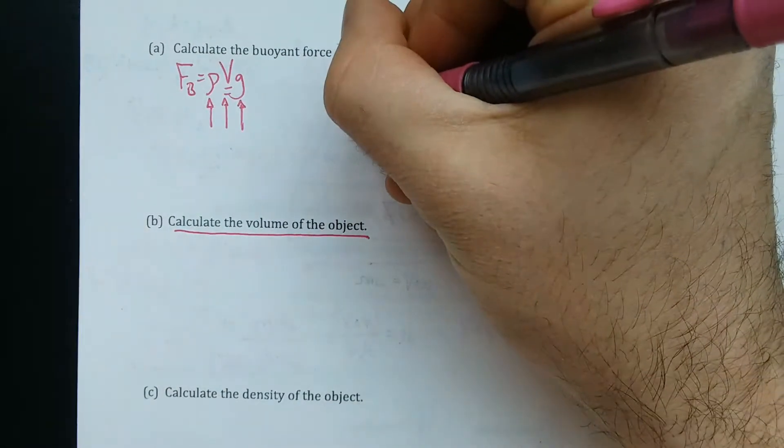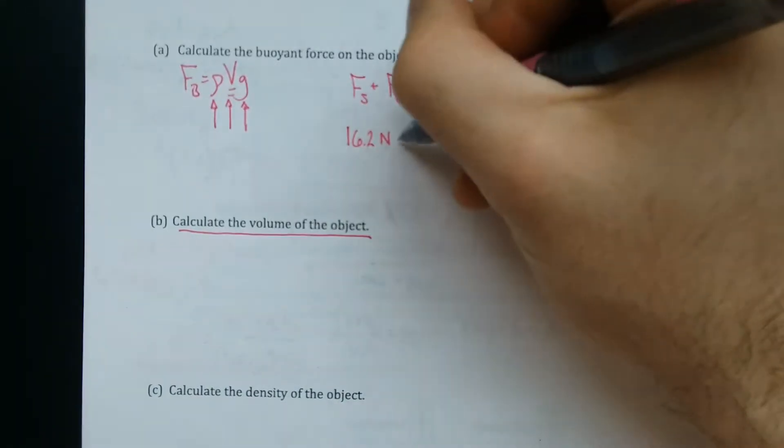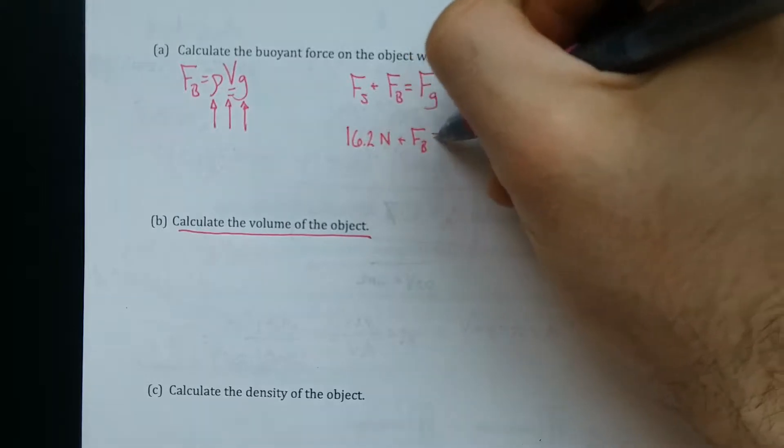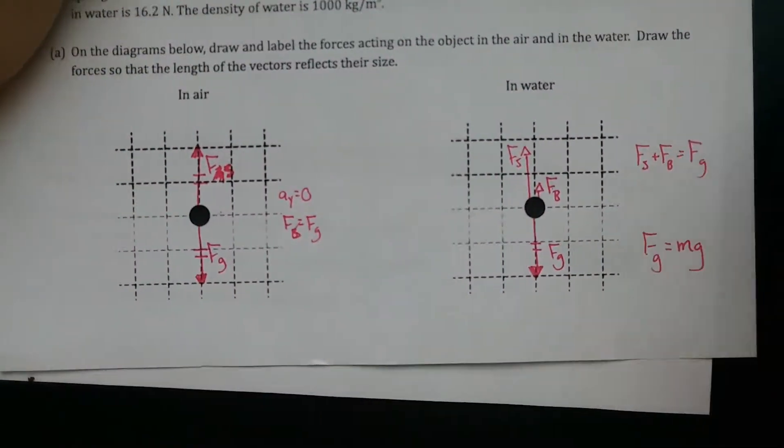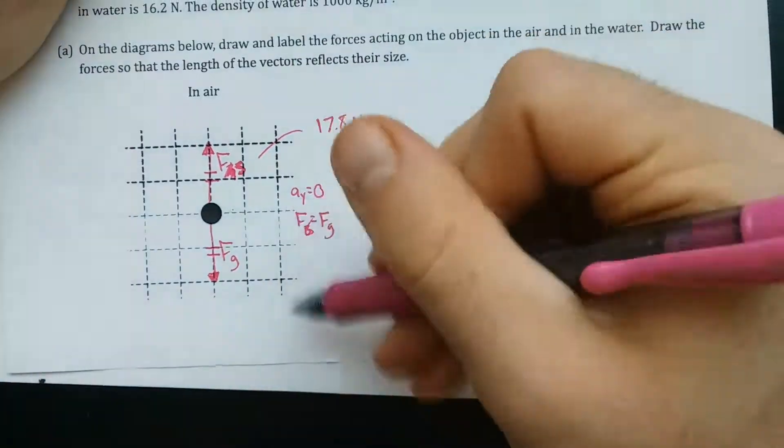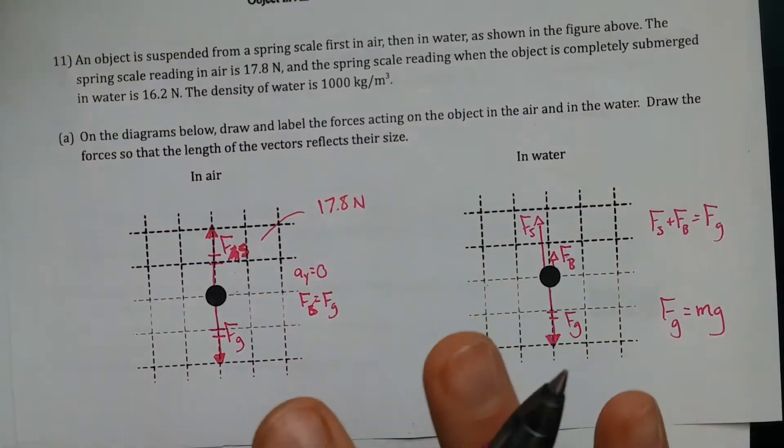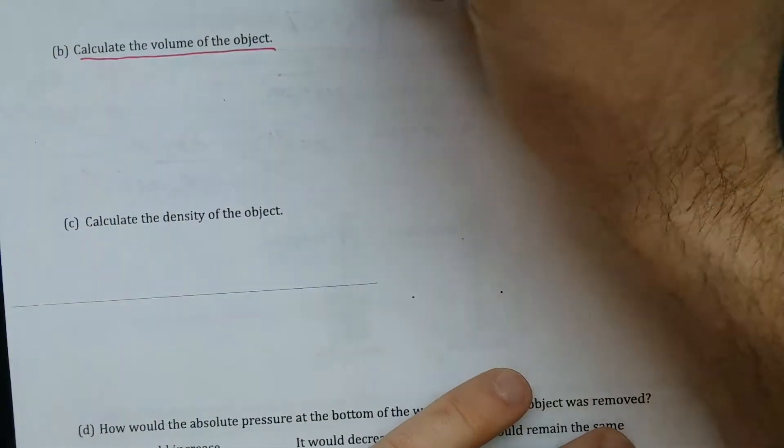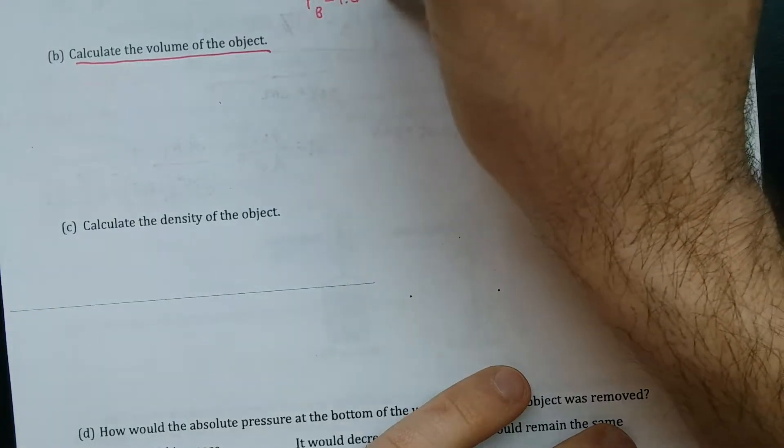But I can know that the spring has reading 16.2 Newtons plus Fb equals 17.8 Newtons. I know the gravitational force has to be 17.8 because I'm told in this part that this is 17.8 Newtons and they have to be balanced because it's not accelerating. A good picture answers the whole problem right here. So there we go. That means the buoyant force must be 1.6 Newtons.